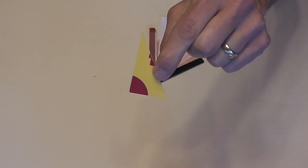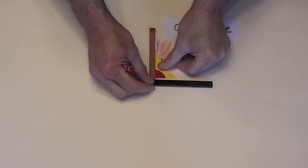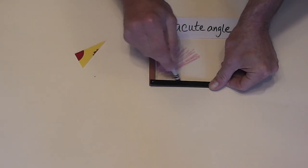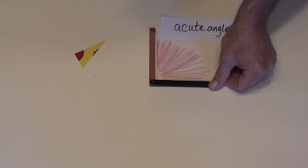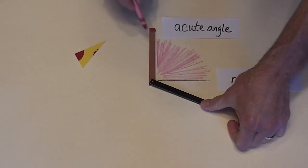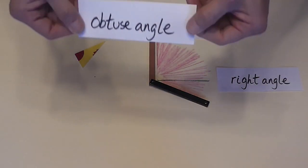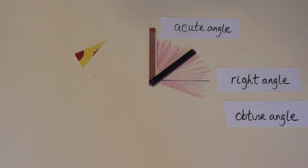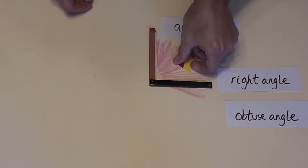I'm going to use this right angle measure to show you what a right angle looks like. Here is my right angle. I'm going to put a line here just to show you where that black line is. We formed a right angle.